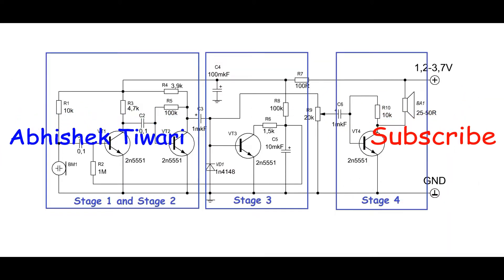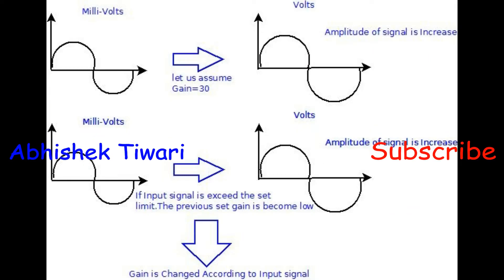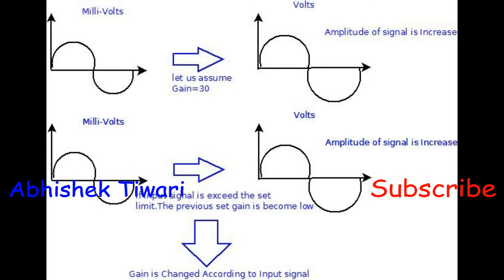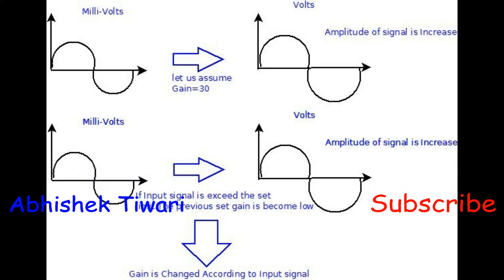In the third stage, the autogain technique is used. If the input from the mic is high, the gain of the amplifier system becomes low, which means it controls the gain of the amplifier system.